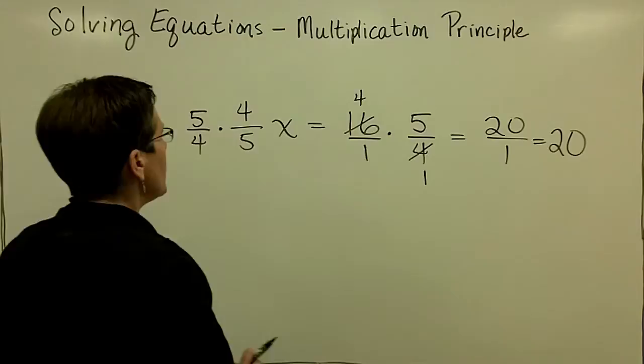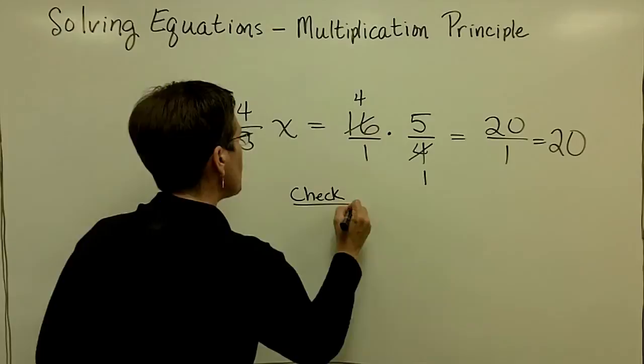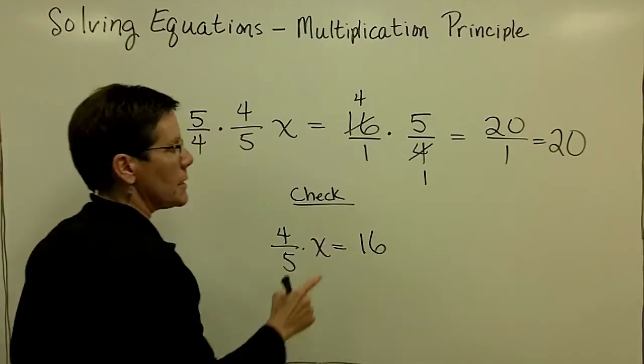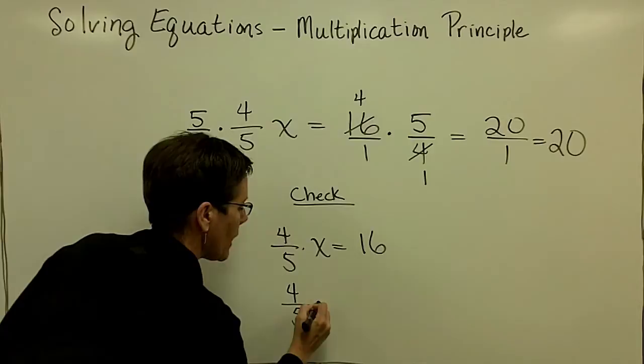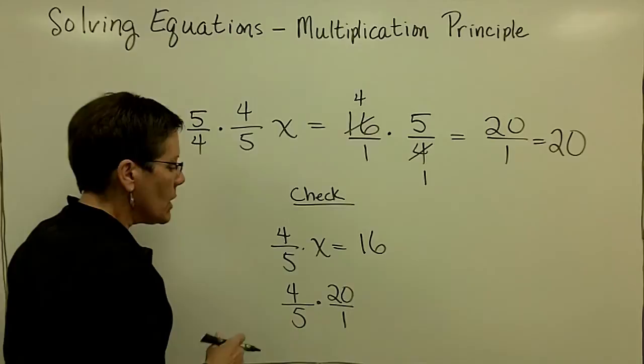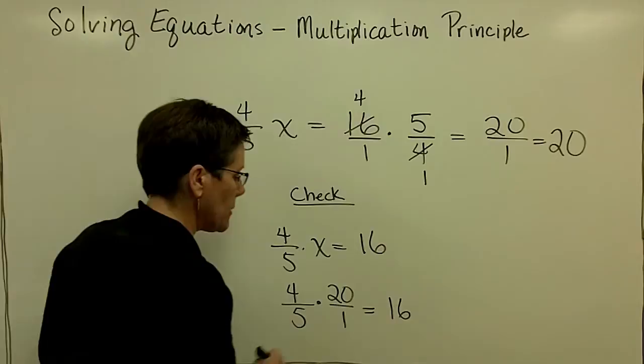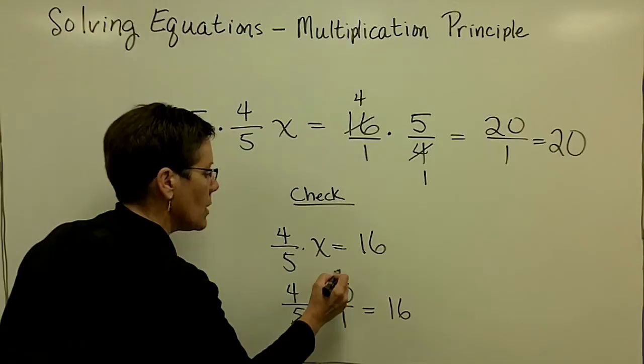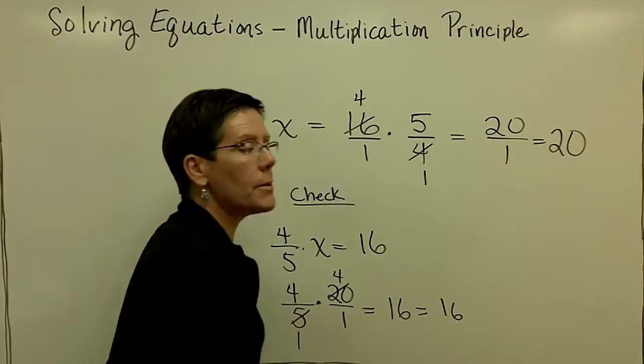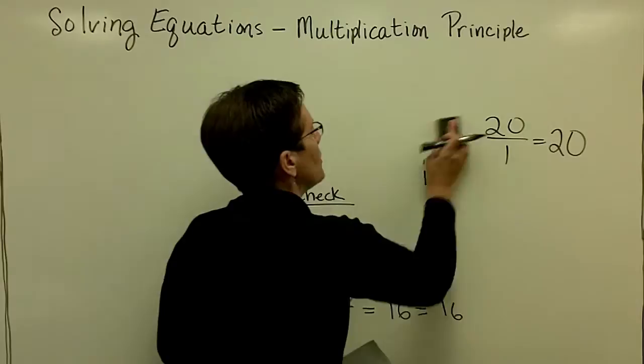Let's check this one. The original problem was 4 fifths times x equals 16. I'm going to put in 20 for x, so I have 4 fifths times 20 over 1. You could call that 80 over 5, and we're wondering if that equals 16. You can say 5 goes into the denominator once and into 80 four times, and 4 times 4 is indeed 16 over 1, or it is equal to just 16.